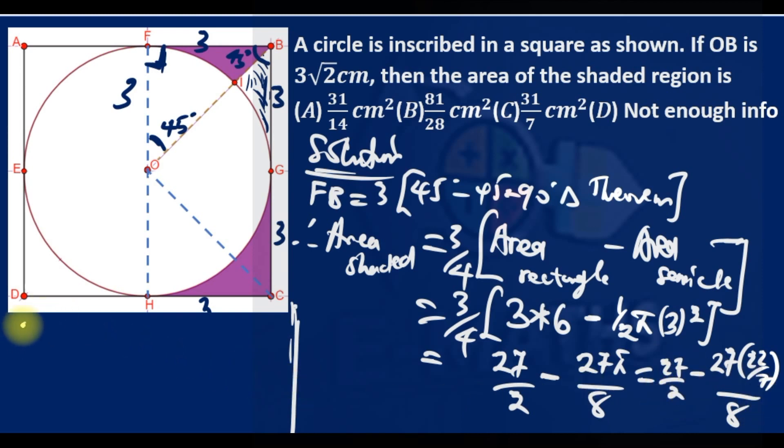So this is 27/2 minus—11 times 7, 27 is 297, 4 times 7 is 28. So the LCM is 28. 27 times 14 is 378 minus 297.